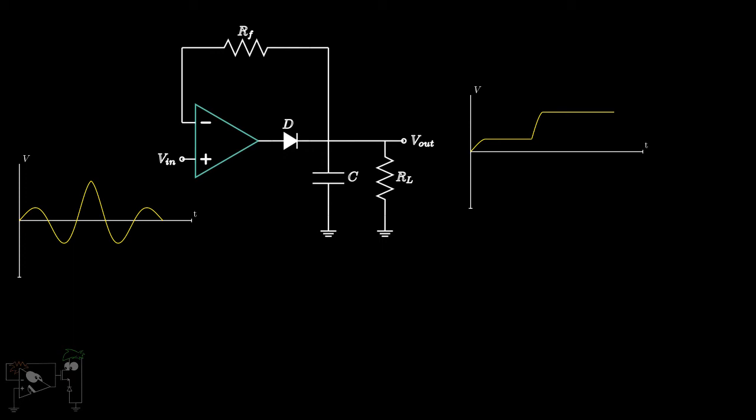However, in this case, when the diode is reverse biased, that is, when the input voltage is less than the peak voltage, the diode discharges through RL.